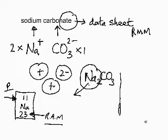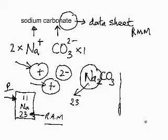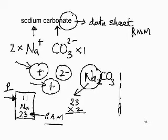That means a magnesium atom is twice as heavy as a carbon atom. The atomic mass of sodium is 23, and in the formula Na₂CO₃ we have two sodium ions. A sodium ion has the same mass as a sodium atom because electrons have negligible mass, so there are two sodiums: 2 × 23 = 46.